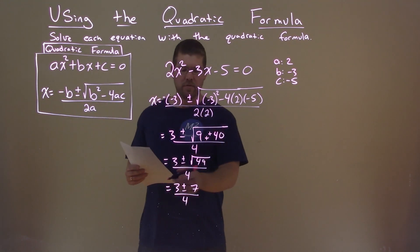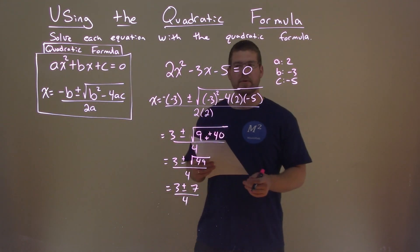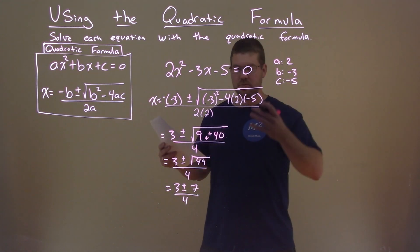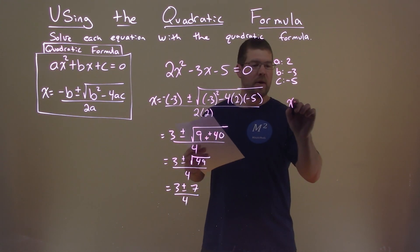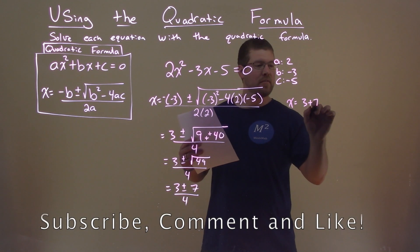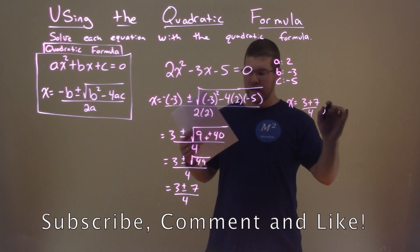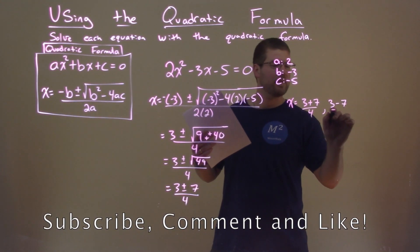At this point, we have 3 plus or minus 7 divided by 4. Let's break this into two parts, the plus and then the minus. So x equals 3 plus 7 over 4, and x equals 3 minus 7 over 4.